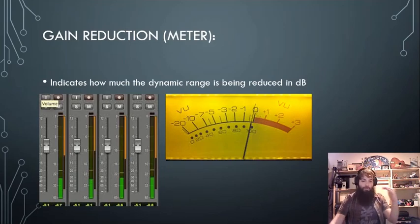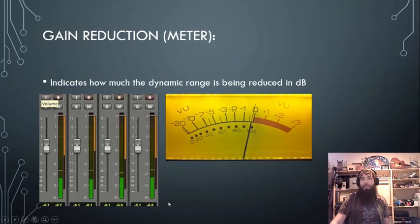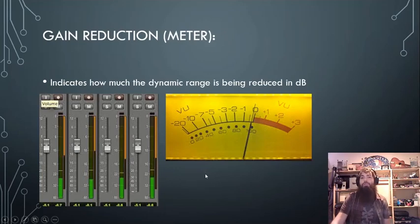Whenever it changes that output, we start getting what we call gain reduction. That's where the signal, where it would normally go above a particular point, is now being decreased in volume. We want to watch our gain reduction meter to see just how much gain reduction we've introduced based on the threshold.